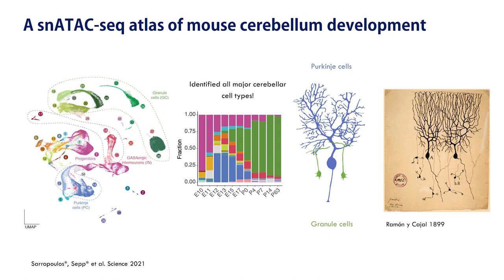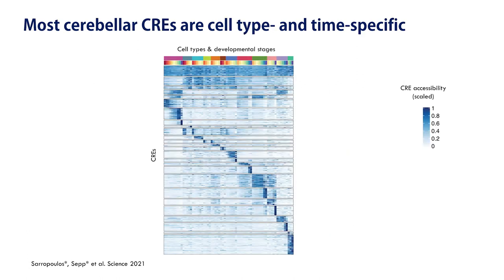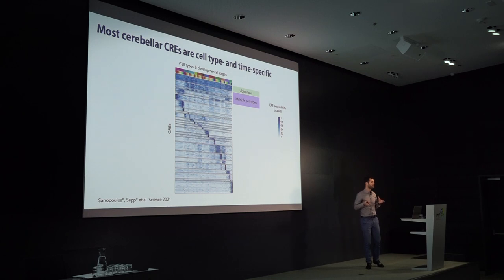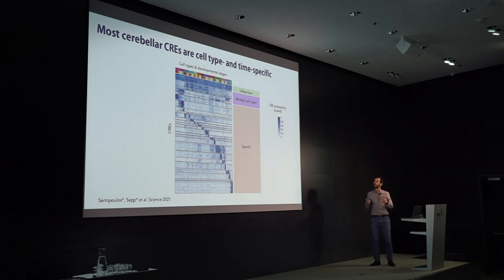After identifying the major cell types, the next step was to look for putative cis-regulatory elements and examine their profiles across cell types and developmental stages. We found very few CREs broadly accessible throughout the dataset — these are mostly promoters. Some are shared across many but not all cell types and are more prominent in early development. But the vast majority of CREs are specific to a single cell type and a restricted developmental window, highlighting the overall context specificity of gene regulation.